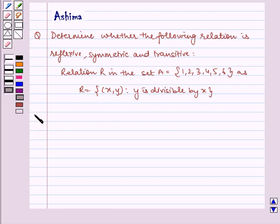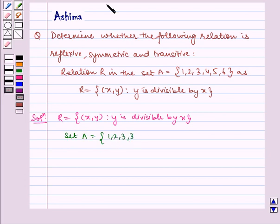Now let's proceed with the solution. Given to us is R = {(x,y) : y is divisible by x}. It is a relation in set A = {1, 2, 3, 4, 5, 6}.